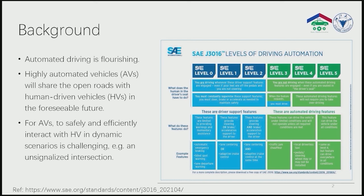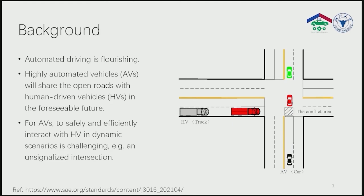Automated driving is a fruition. As defined in the SAE J-3016 standard, higher levels of driving automation will become possible in the foreseeable future. It can be expected that highly automated vehicles will share the open roads with human-driven vehicles. Therefore, for automated vehicles, it is challenging to safely and efficiently interact with human-driven vehicles in dynamic scenarios, for example, at an unsignalized intersection.